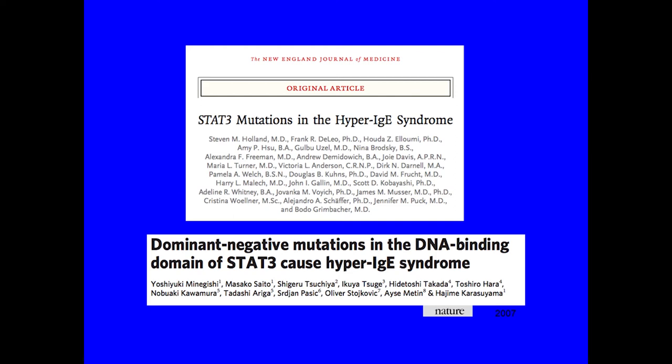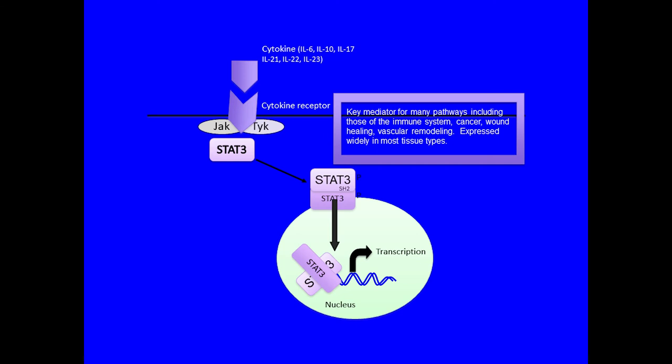I started taking care of individuals with hyper-IgE syndrome at the NIH in 2005. At that time, we had no idea what was causing this confusing disease where patients had Staph infections and pneumonias but also retained baby teeth. In 2007, the genetic cause was found: STAT3 mutations, identified simultaneously in Japan and by our group at the NIH. STAT3 stands for Signal Transduction and Activation of Transcription.